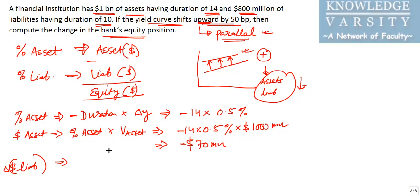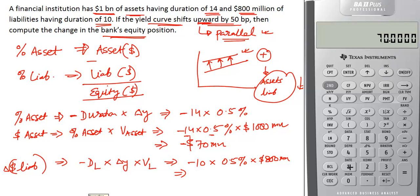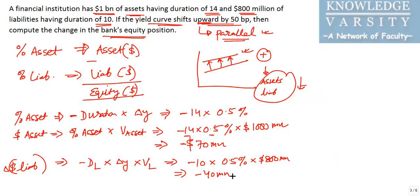The dollar change in liability equals: duration of liability × change in yield × value of liability. The duration of the liability is 10, the change in yield is 0.5%, and the value of the liability is $800 million. So: 10 × 0.5% × 800 million = $40 million. Note that it carries a negative sign, so the liability has decreased by $40 million.